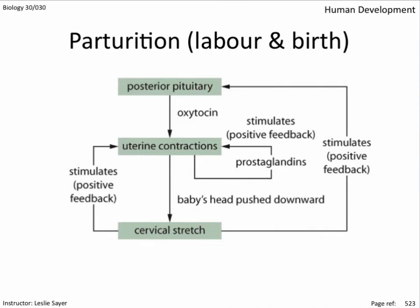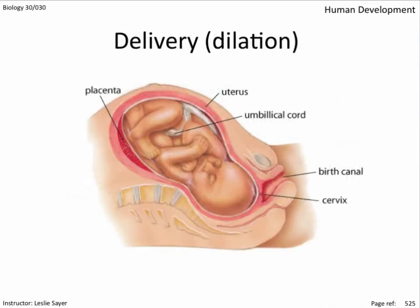Parturition — labor and birth. Labor is marked by the onset of uterine contractions, induced by the stretching cervix triggering the release of oxytocin. Prostaglandins facilitate uterine contractions, which push the fetus downward, stretching the cervix even more and causing further oxytocin release — a positive feedback loop. Relaxin, a placental hormone produced prior to labor, causes the woman's pelvic ligaments to loosen and the cervix to soften. Uterine contractions cause the cervix to dilate, the amniotic sac breaks lubricating the birth canal, and the dilation stage lasts from two to twenty hours.